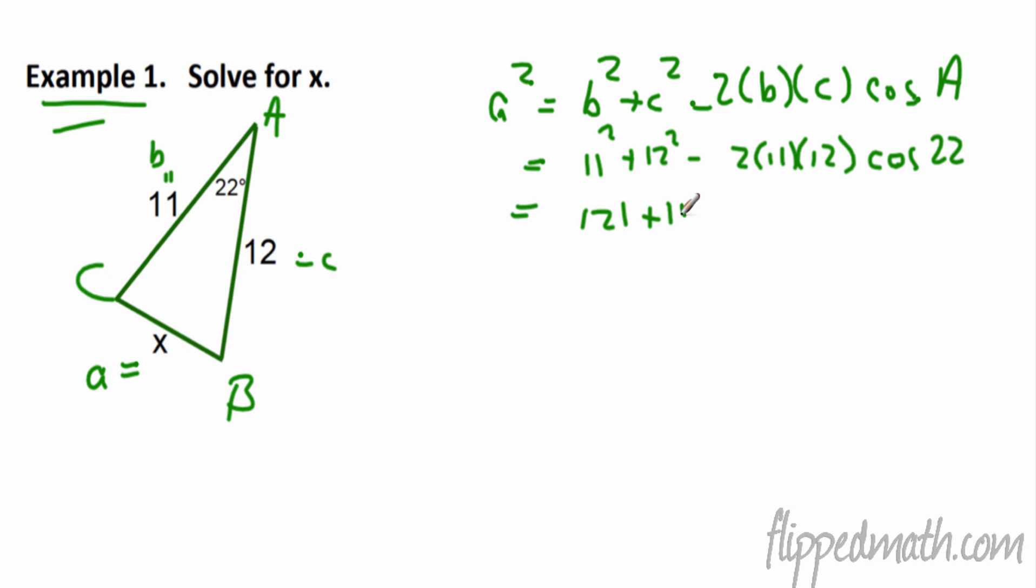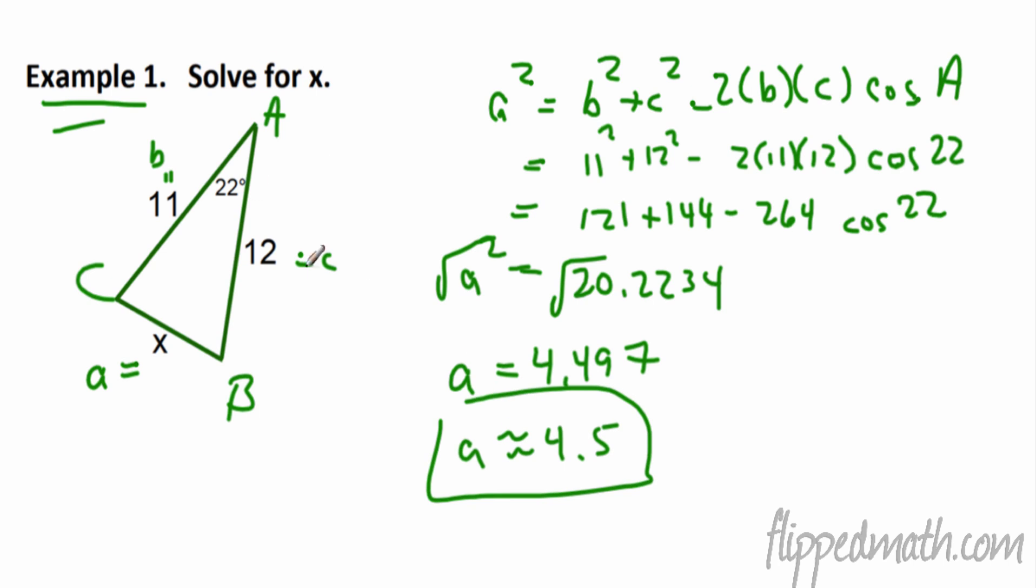Alright, we'll close that circle off there. Can we figure, what do we get, 121 plus 144, what do we get, 22 times 12 is 264 times the cosine of 22. And if I simplify this line, it's going to reduce to 20.2234. And that's what A squared is equal to. So what's the inverse of squaring a variable? You need to take square root. So square root of each side, we're going to get A equals 4.497, which we're going to round that to the nearest tenth. So we're going to call it 4.5. There you go. That is the law of cosines solving for a side length.